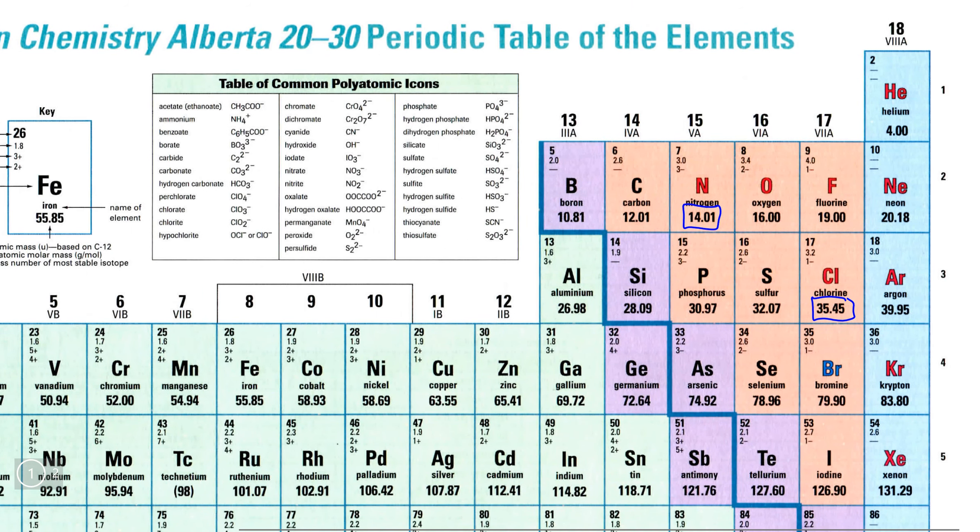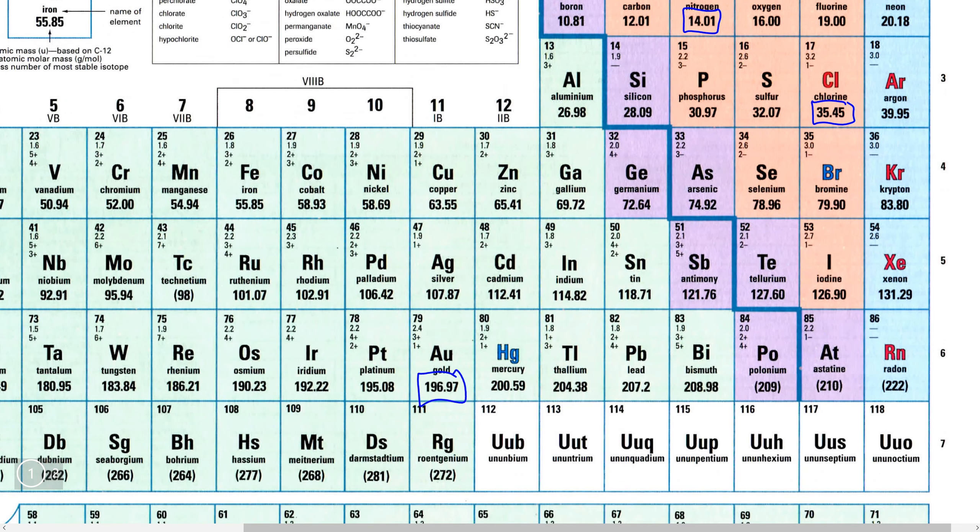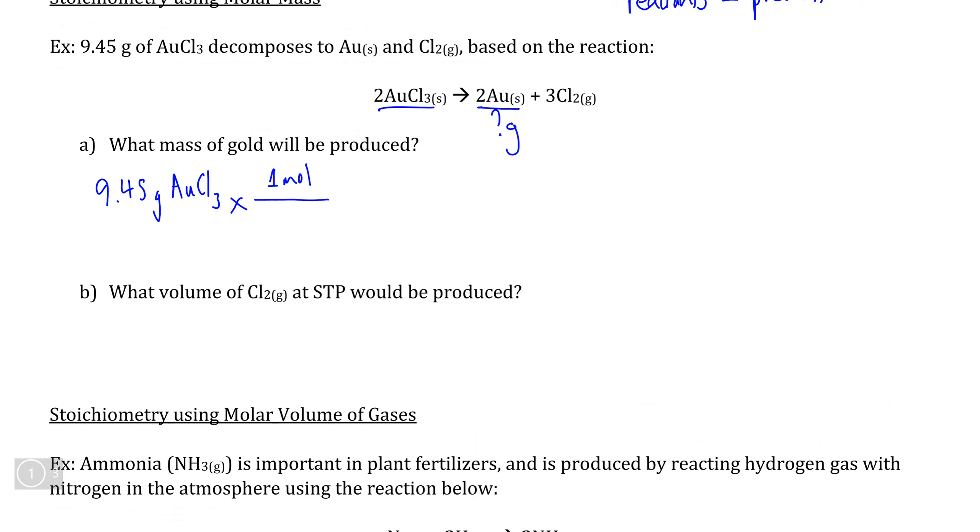We can see here that chlorine has a molar mass of 35.45, and gold has a molar mass of 196.97. So if we do the molar mass calculation here, the second number that I'm adding is 35.45 times 3, because we have three chlorine atoms as part of AuCl3.